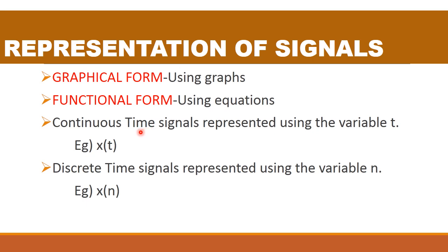Remember always that continuous time signals are represented using the variable t. Example: x(t) represents a continuous time signal. Discrete time signals are always represented using the variable n. Example: x(n).